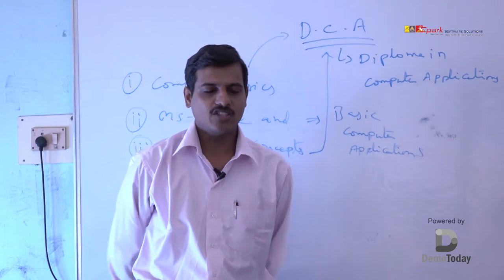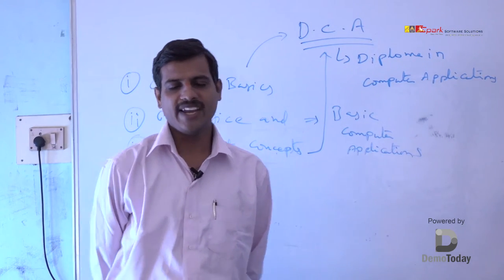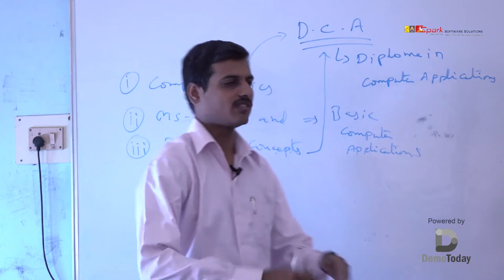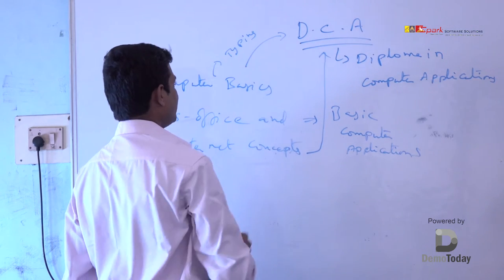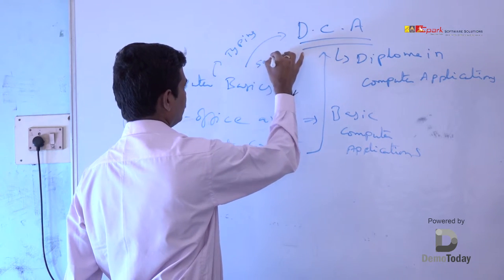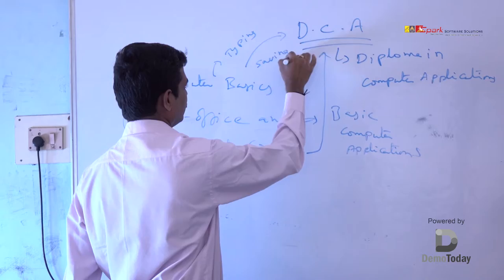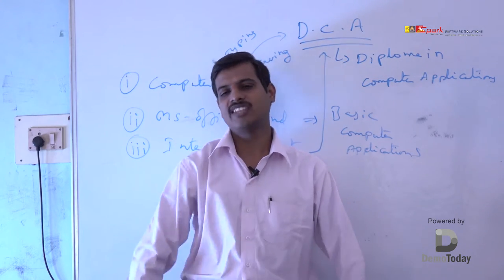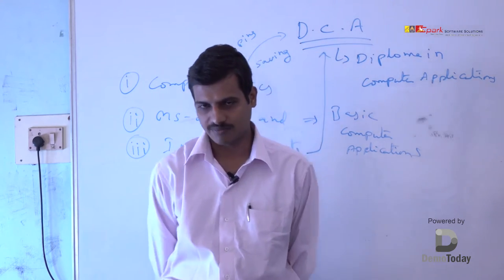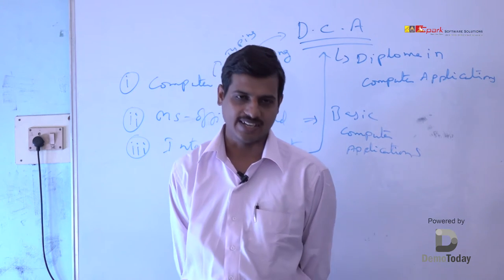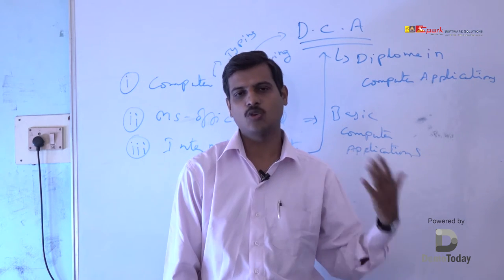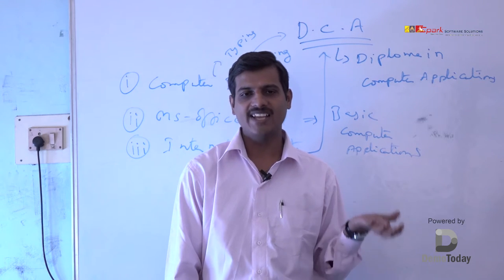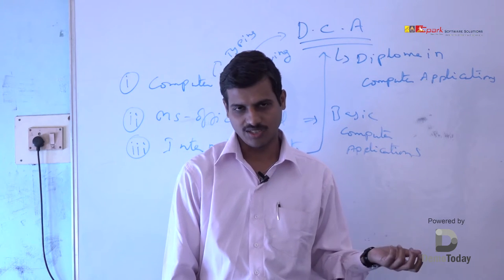The main part of computer basics is first, typing, and second, saving — that means how to type into the system and how to save into the system. A computer is an electronic device which has storage ability and we can type as fast as possible.